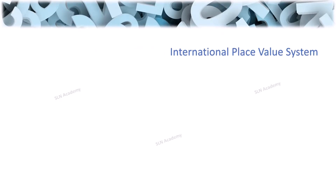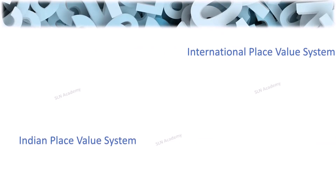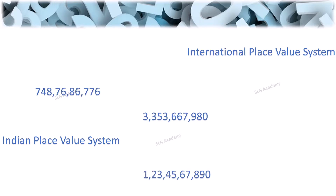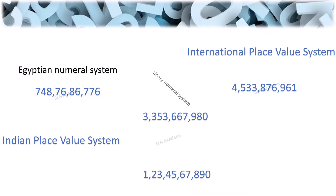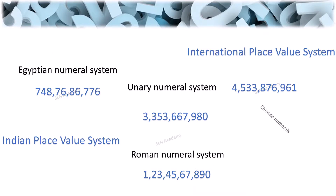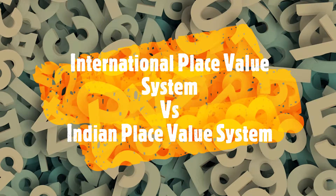International place value system and Indian place value system are two number systems which make reading and writing of larger numbers easier. There are other number systems as well, which are helpful in reading and writing of very large numbers. Let us start our comparison between Indian and international place value systems.